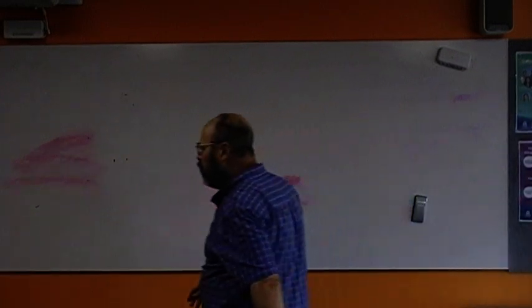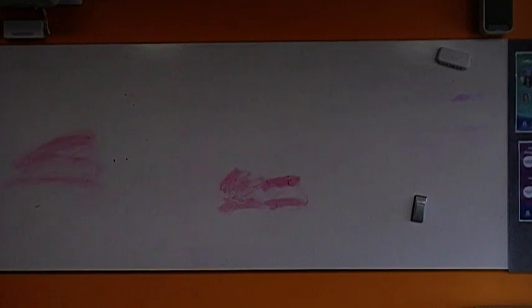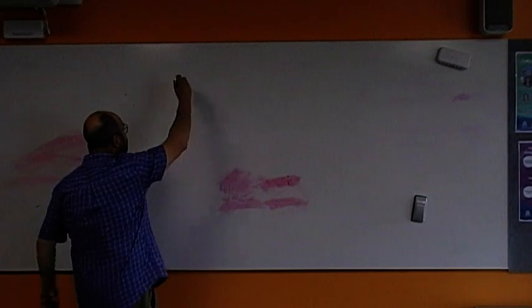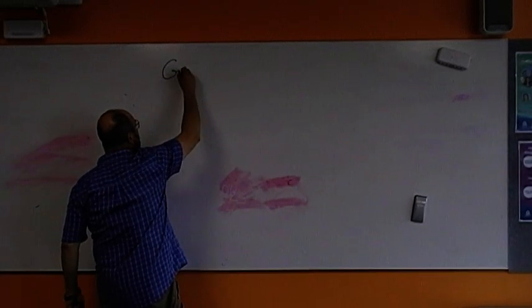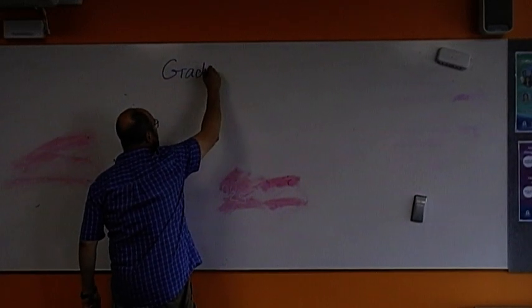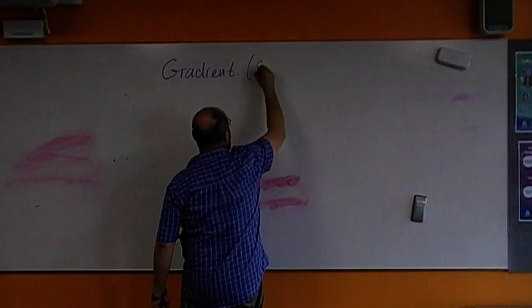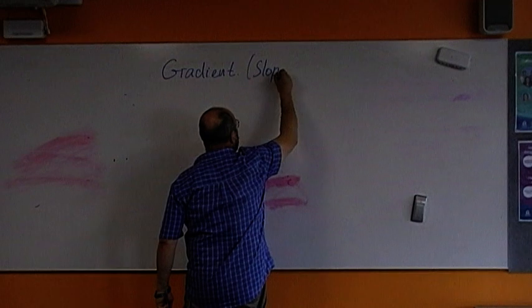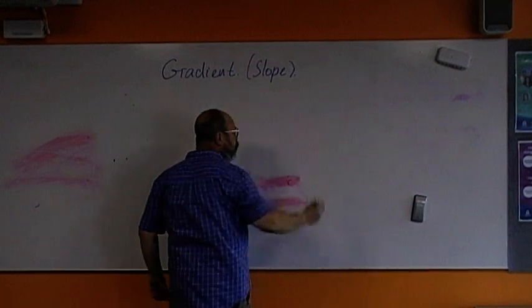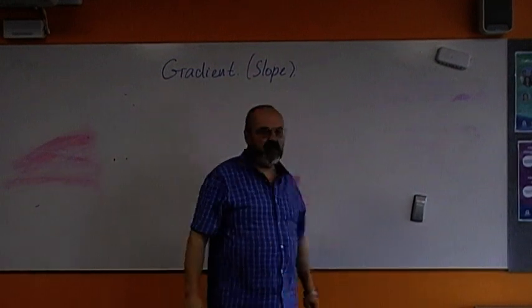So, today we will learn about one of the most important things that describes a straight line. It's called gradient. So, our learning intention today is to learn about gradient. Also, sometimes it's called slope.